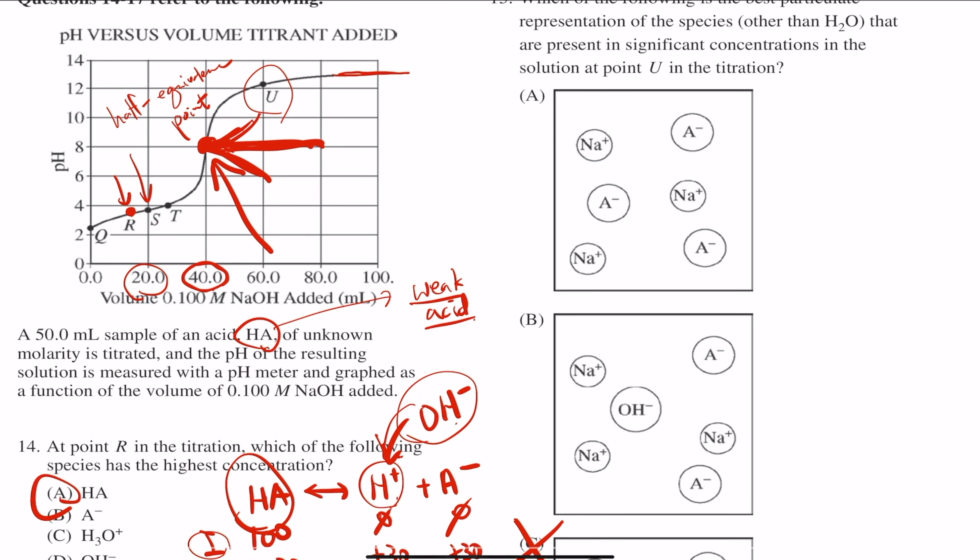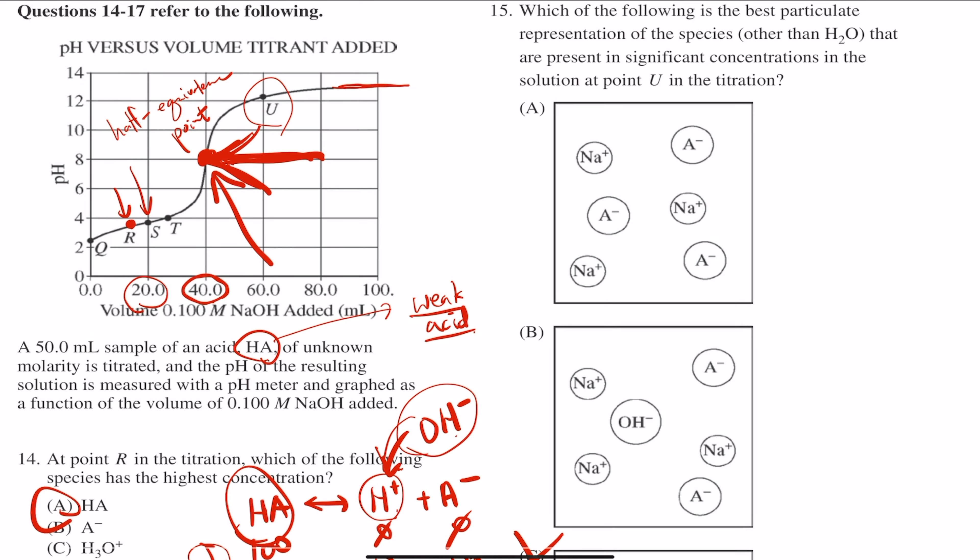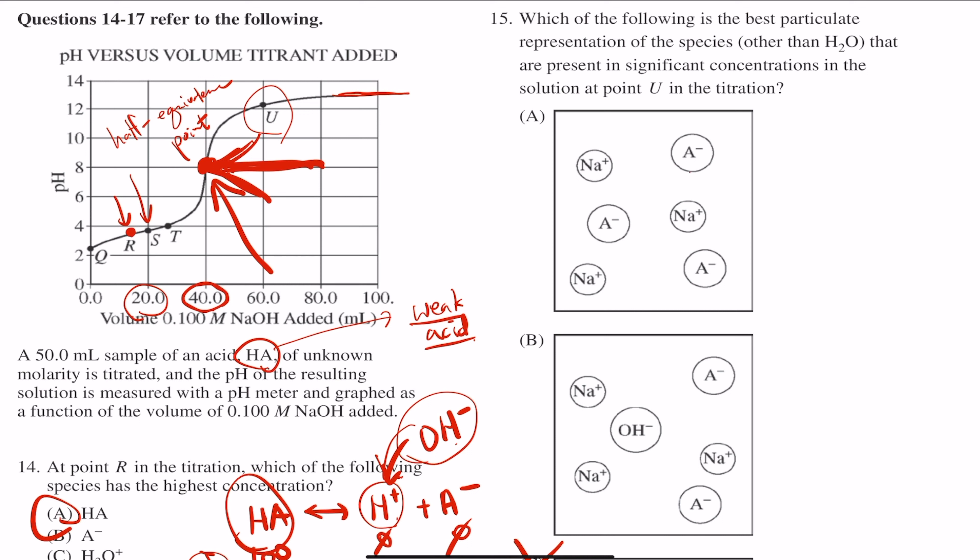So between A and B, what do we have? Once again, it should be all basic, something very basic. If you take a look at A, you got the conjugate base coming off from your acid and you have the sodium ion. A is terribly wrong because if that were the case, the pH should be exactly at 7 because that's very neutral.